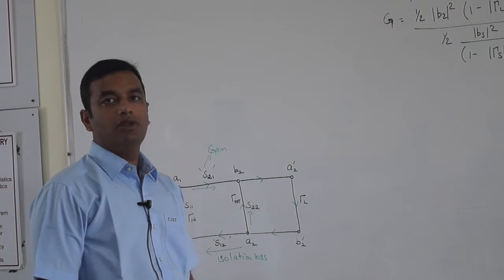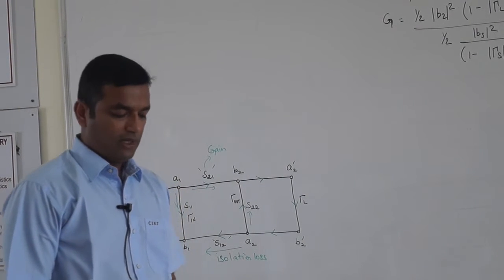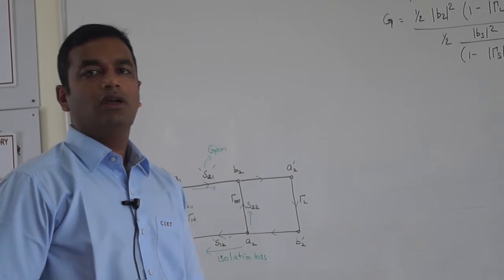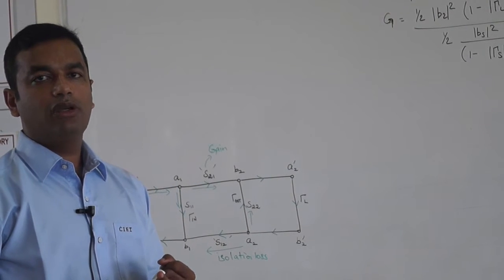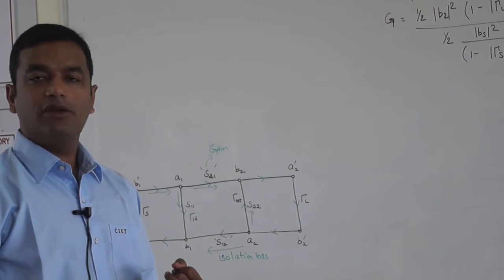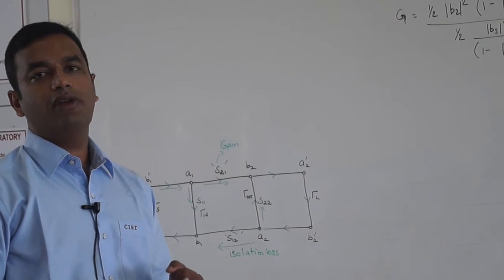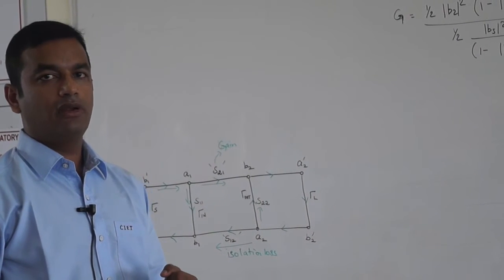We will continue with amplifier power relations. In the last class we have seen three important things: incident power, input power, and power available into the amplifier.